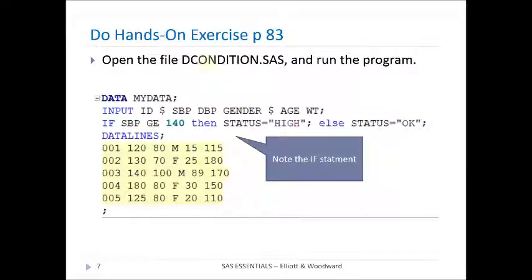Let's do a hands-on exercise. This is from page 83. Open the file called decondition.sas, and we're going to run this program. But notice first the if statement here. If systolic blood pressure greater than or equal to 140, then status, a character variable, is going to be set to high. Else, status is going to be set to OK.